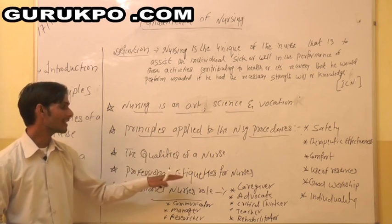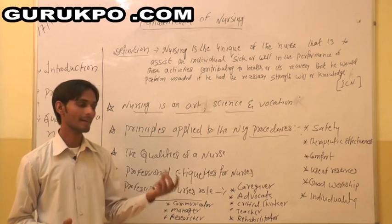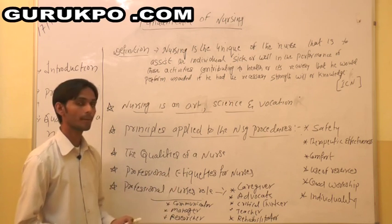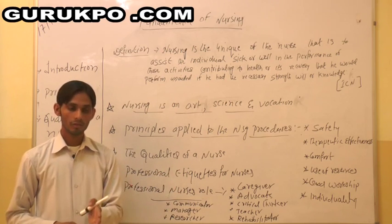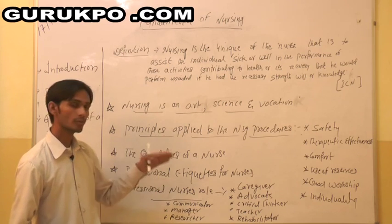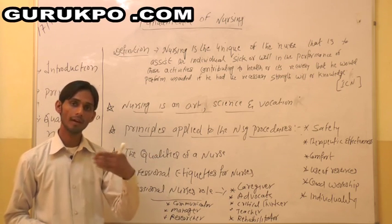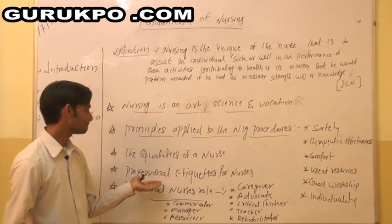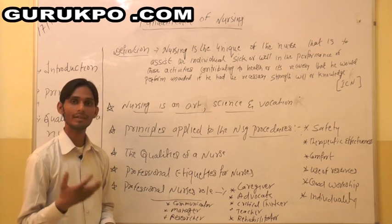Next, we will move on to professional etiquettes for nurses — what are all the professional rules, regulations, and limitations nurses have to maintain. First, the nurse should be soft in nature — she should be sober and simple. She should obey the seniors. Whenever seniors are coming, she has to address them by wishing good morning or good afternoon, and address them as sir or madam.